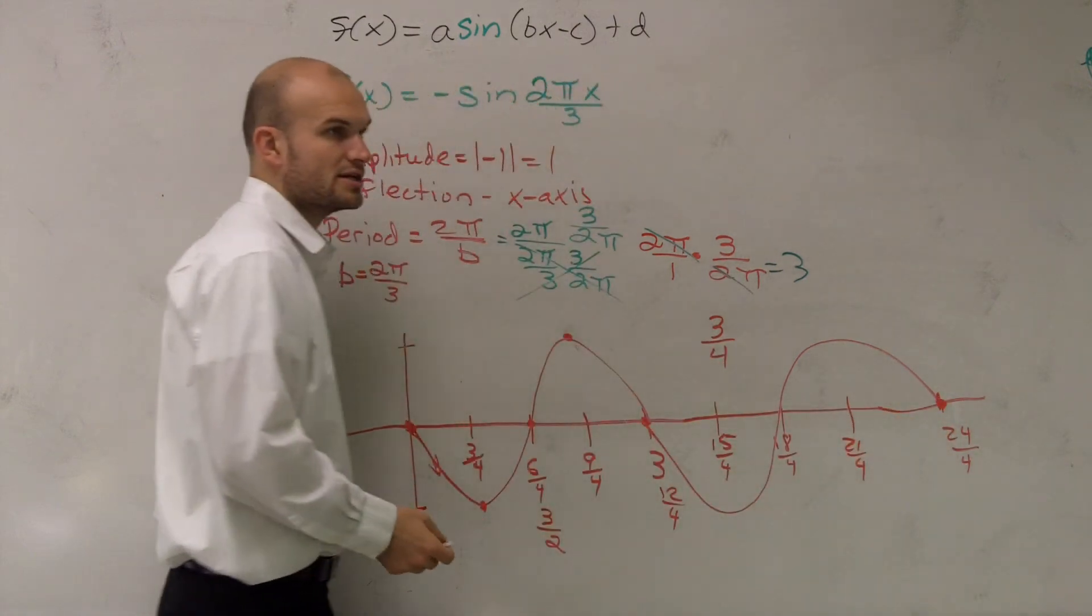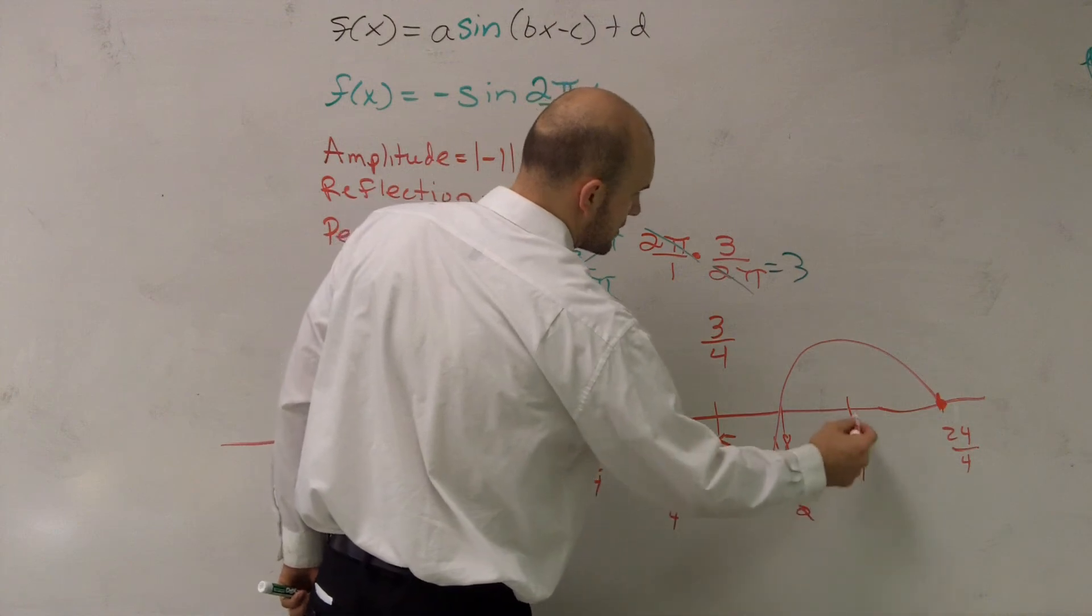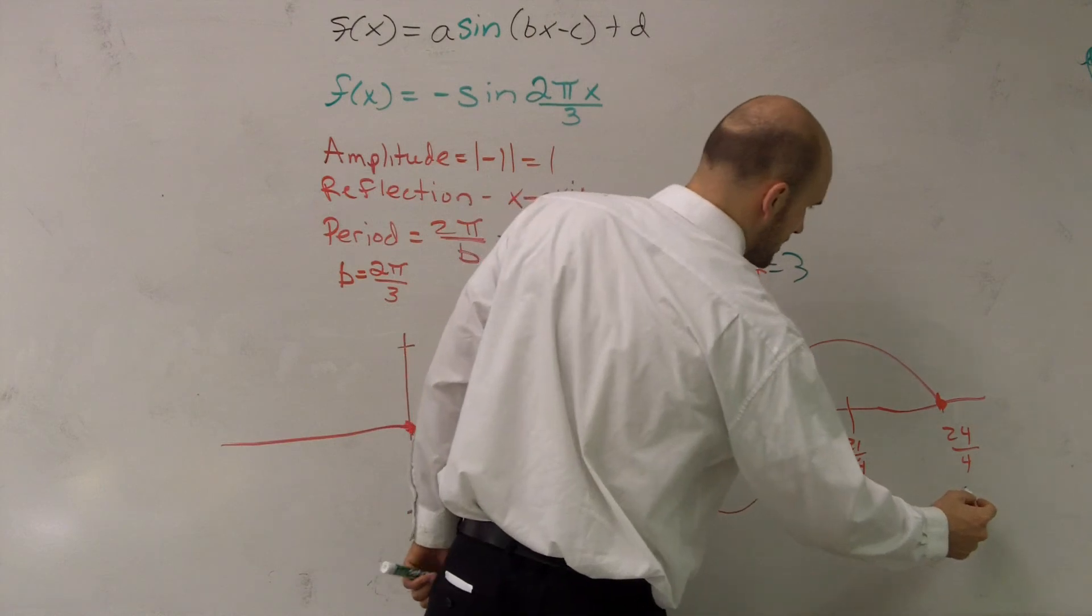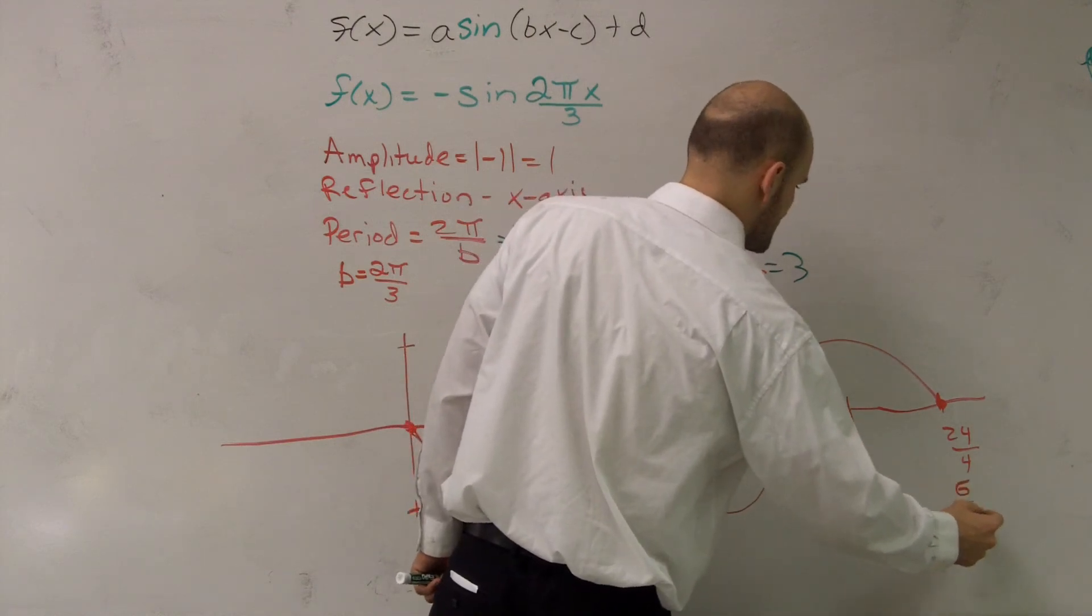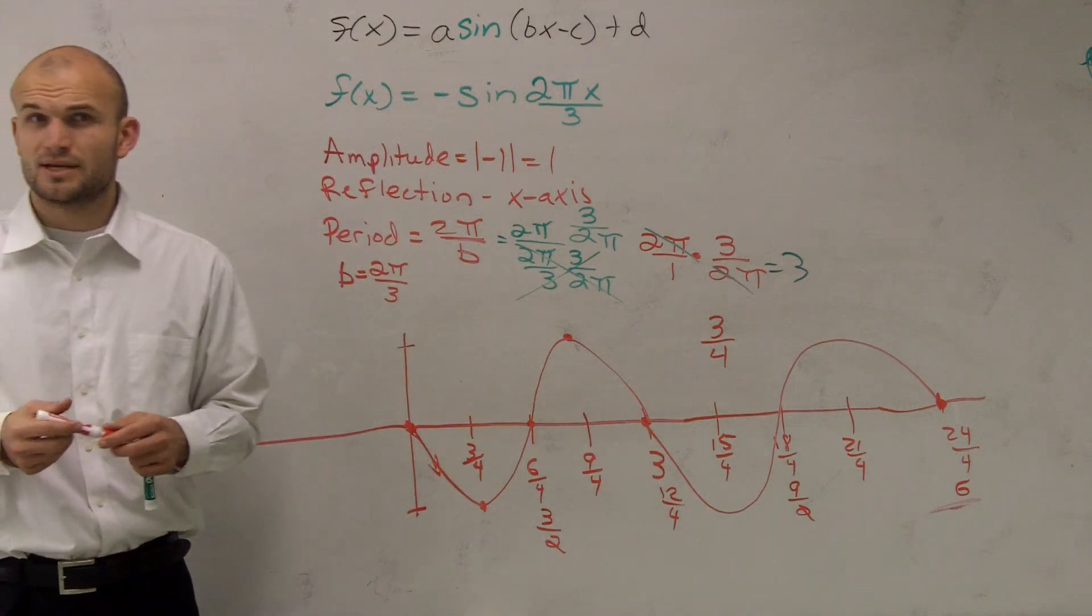And then obviously reduce the numbers that you can. This will become 9 over 2. That one you can't reduce. And then this one, you can do 6 over 6. Okay? Make sense?